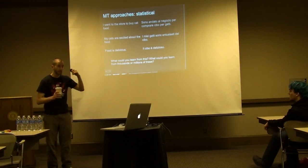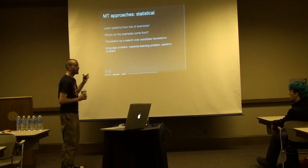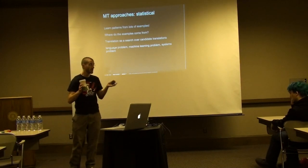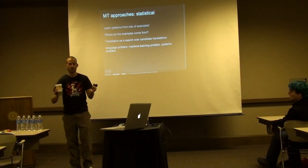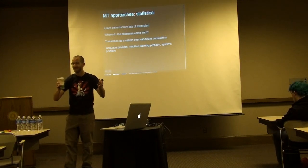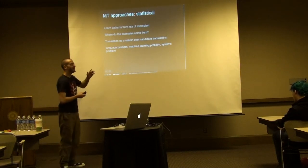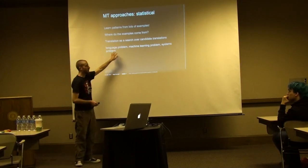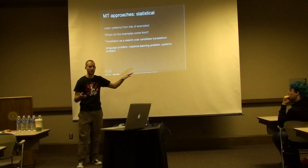This is actually, at a very basic level, how Google Translate works. You learn patterns from examples — lots of them. You do words, you scale up to phrases, chunks of sentences, maybe whole sentences. You find the correspondences and learn the probability that this sentence translates to this sentence. It's not that Google is the only one doing this — this is the statistical machine learning approach. You have a language problem, you turn it into a machine learning problem, and then Google is really good at turning machine learning problems into systems problems.